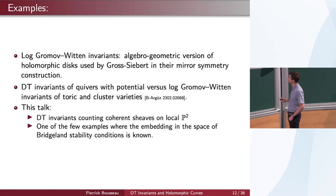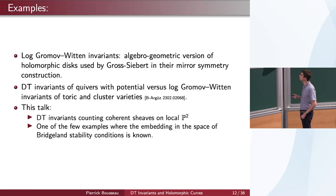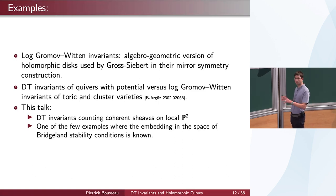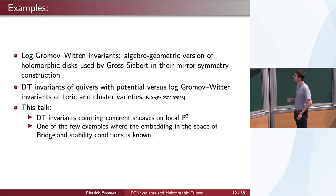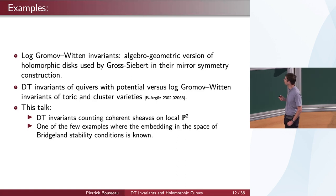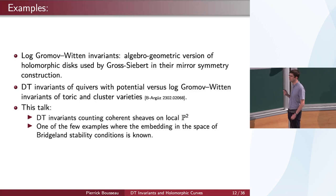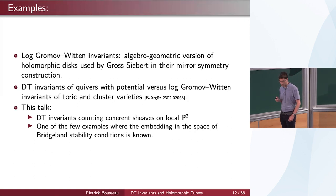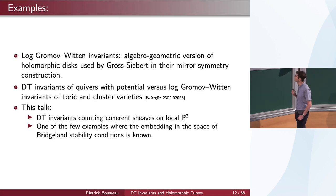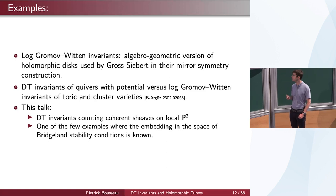Actually there are other examples of such correspondence between DT invariants and counts of holomorphic disks precisely defined through logarithmic Gromov-Witten invariants. For example, it's possible to state some correspondence between DT invariants of so-called quivers with potential — not invariants of a geometric non-compact Calabi-Yau threefold, but defined using a more algebraic starting point. You can prove a correspondence between these kinds of counts and some logarithmic Gromov-Witten invariants of some toric or cluster varieties; it's some joint work with Davesh Maulik. In this talk I will consider a different example, which has the advantage of being about some geometrical story: DT invariants of coherent sheaves on the non-compact Calabi-Yau threefold local P².